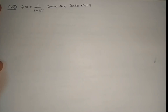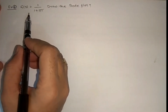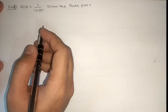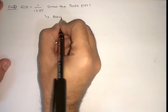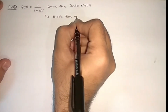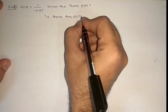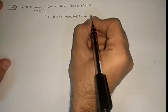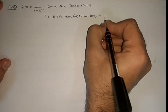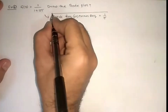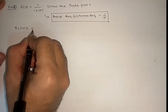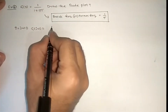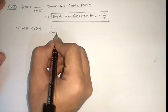Let us see in this lecture the 8th problem on Bode plot. Here G(s) = 1 / (1 + sτ). The break frequency or corner frequency is 1/τ. So convert s = jω: G(jω) = 1 / (1 + jωτ).